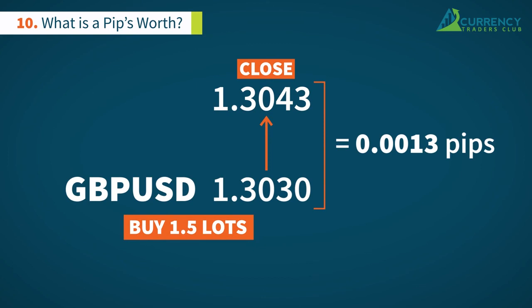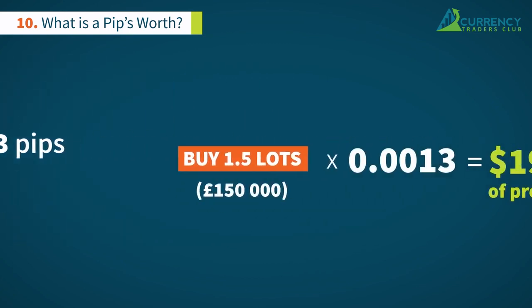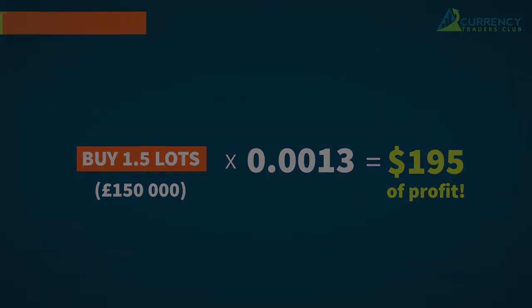But how much did he make in dollars? The formula in the case of GBPUSD here would look like this. That's how you calculate the monetary value of a pip.